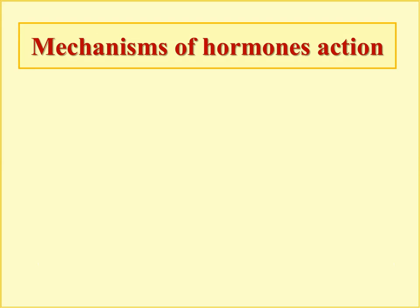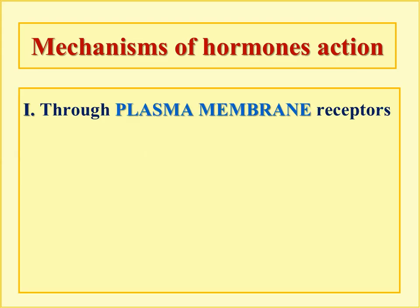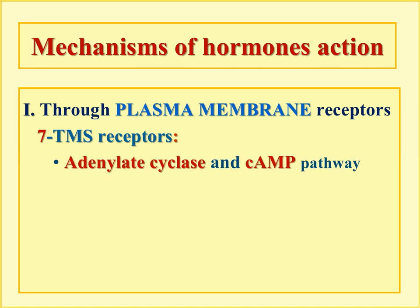For the general characteristics of hormones, first we need to specify the mechanisms of their action. If you have already learned the chemical signaling mechanisms, you may find many familiar sequences and pathways. Hormones may act through plasma membrane receptors, and they can use seven transmembrane segment receptors with predominantly two pathways.